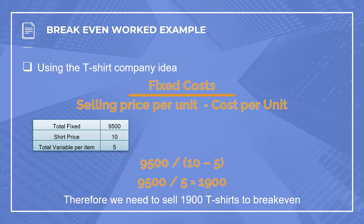Let's look at a breakeven example using a t-shirt company. We know our fixed costs are £9,500, and we know our selling price is going to be £10. We know our cost per unit is £5, so we put all of those figures into our formula.